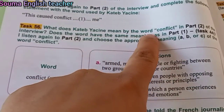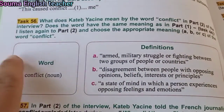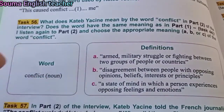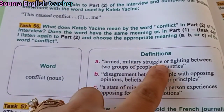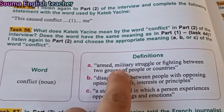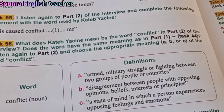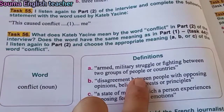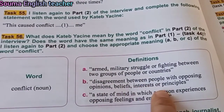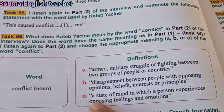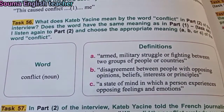Task 56: What does Katib Yassine mean by the word 'conflict' in the interview? The options are: A — armed military struggle or fighting between two groups of people or countries; B — disagreement between people with opposing opinions, beliefs, interests or principles; or C — a state of mind in which a person experiences opposing feelings and emotions.